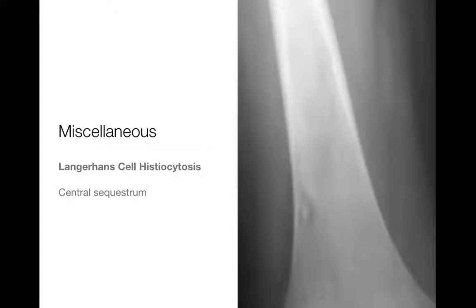Langerhans cell histiocytosis can look like many things, but one of the classic features is a geographic lytic lesion with a bony sequestrum. This looks just like a Brody's abscess a lot of the time, and it can be very hard to tell apart — you'll be stuck giving a differential. Look for other areas of involvement in the bone; is it maybe multifocal? It can also involve other organ systems beyond just the bones.